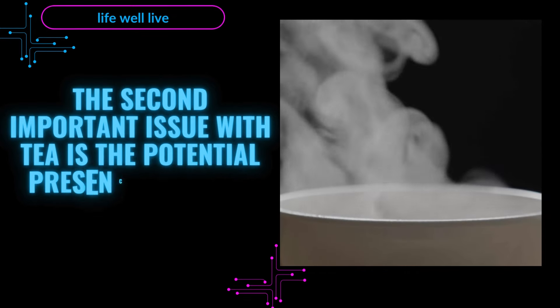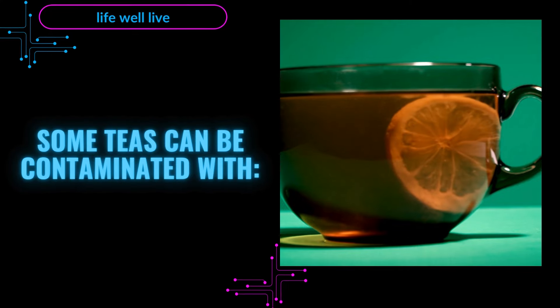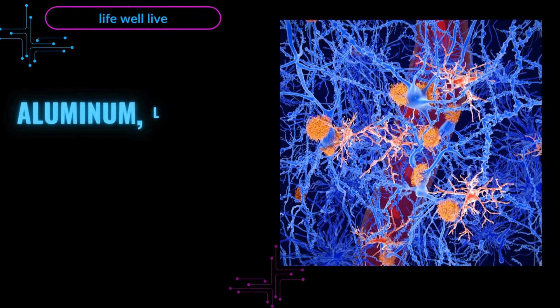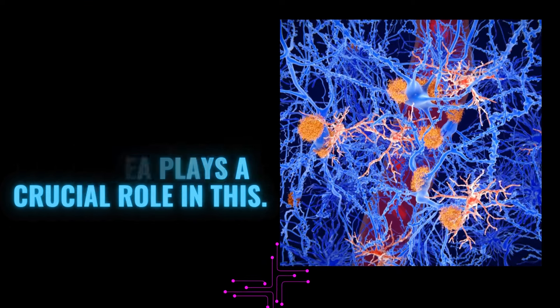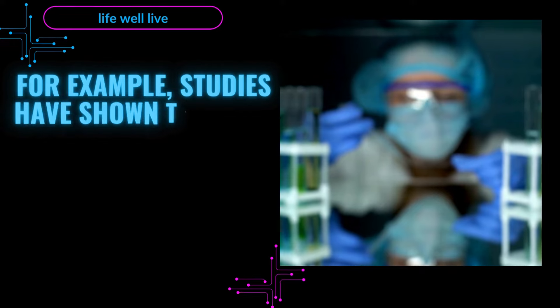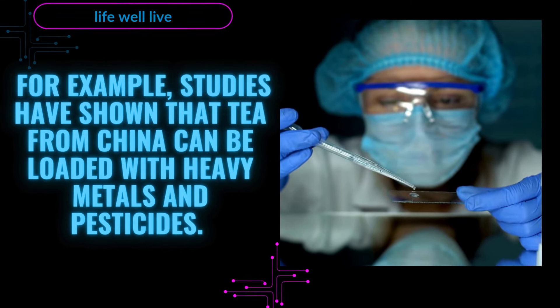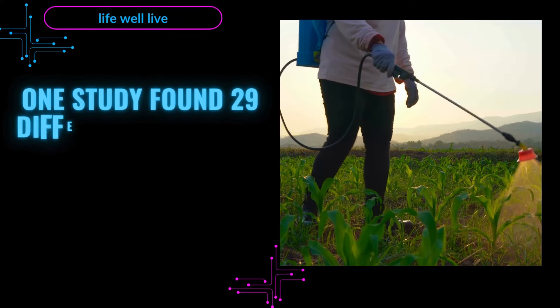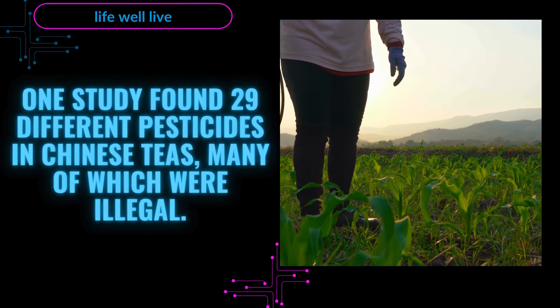The second important issue with tea is the potential presence of heavy metals. Some teas can be contaminated with aluminum, lead, and arsenic. The source of the tea plays a crucial role in this. For example, studies have shown that tea from China can be loaded with heavy metals and pesticides. One study found 29 different pesticides in Chinese teas, many of which were illegal.